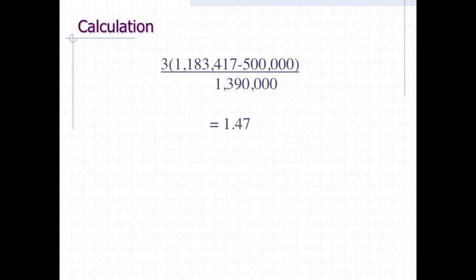Let's calculate Pearson's index for our baseball example. The standard deviation of the baseball salary is $1,390,922. Therefore, Pearson's measure of skew for this distribution is 3 times the quantity of 1,183,417 minus 500,000 divided by 1,390,922, which equals 1.47.